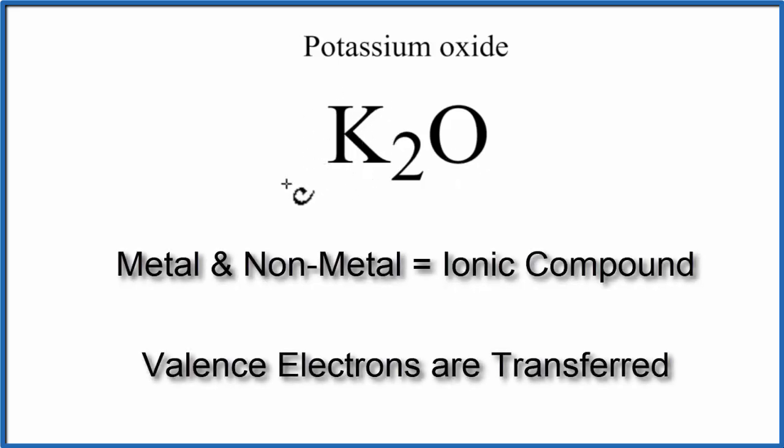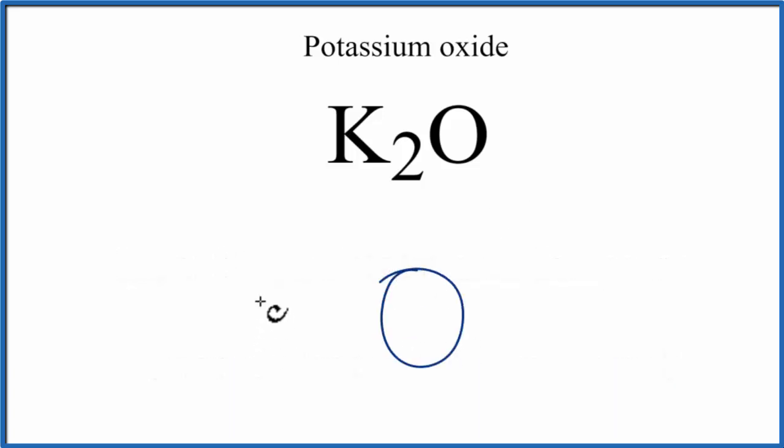And the metal will transfer valence electrons to the non-metal. So let's write the oxygen in the middle and put a potassium on either side. Potassium is in group 1, that means it has one valence electron. So let's put one valence electron next to each potassium.